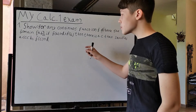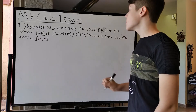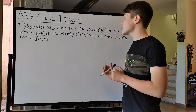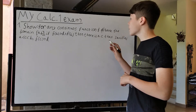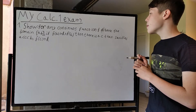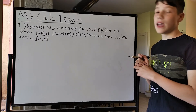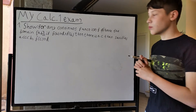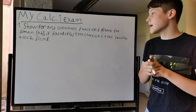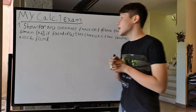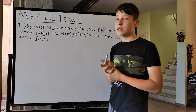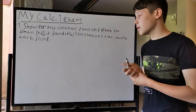So, this is the first one. We need to show that for any continuous function f over the domain [a, b], if f(a) is bigger than d, which is bigger than f(b), then there is a c that satisfies c is between a and b, and f(c) is equal to d.